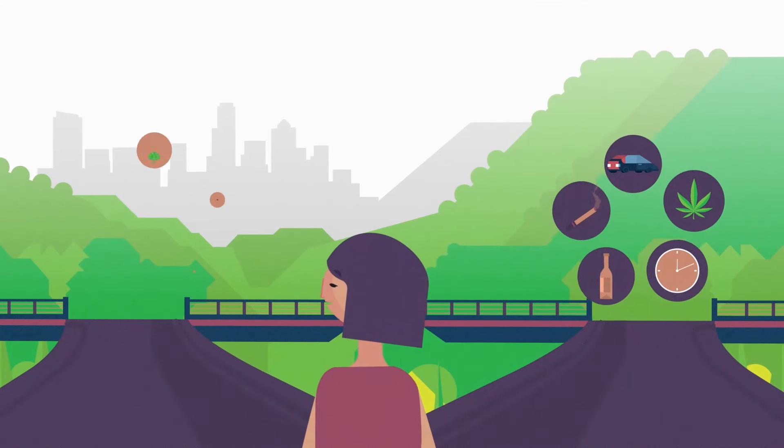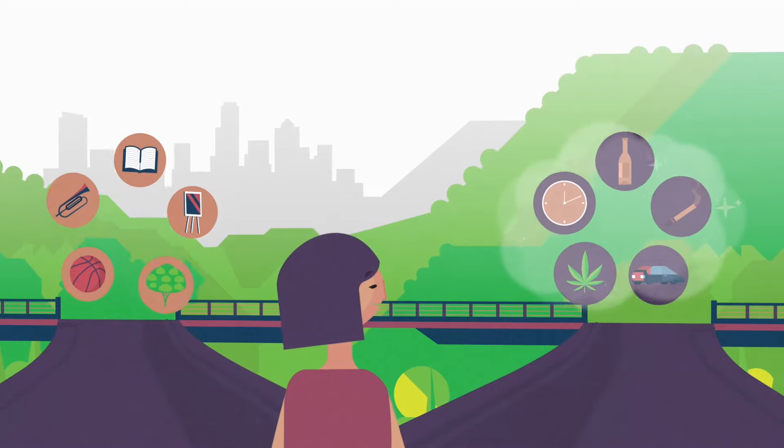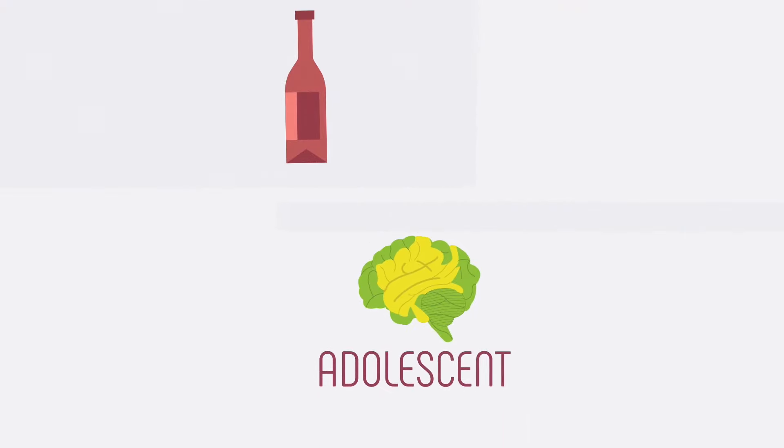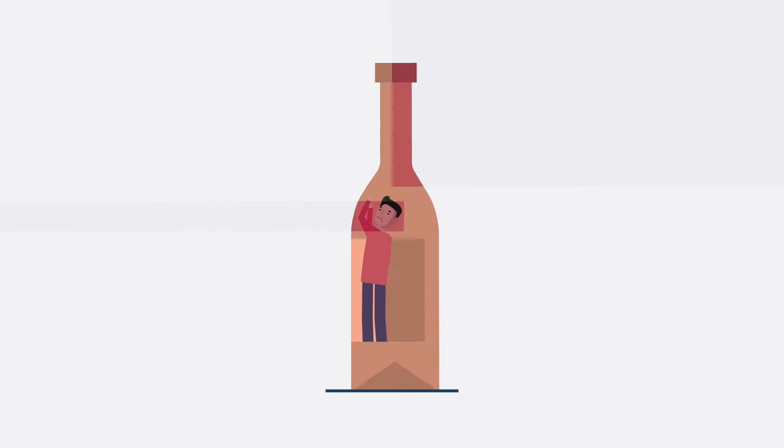Adolescents are more likely to try drugs and alcohol in the first place. Early use of alcohol or drugs can disrupt brain development in ways that increase a person's risk of developing an addiction later in life.